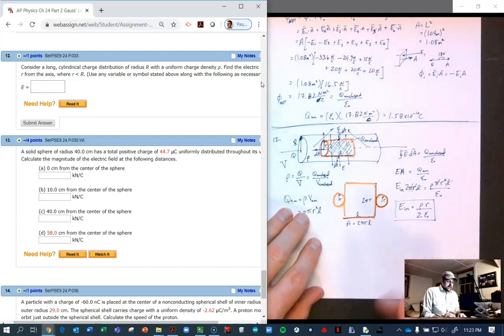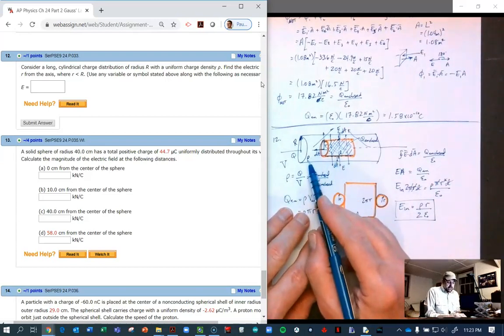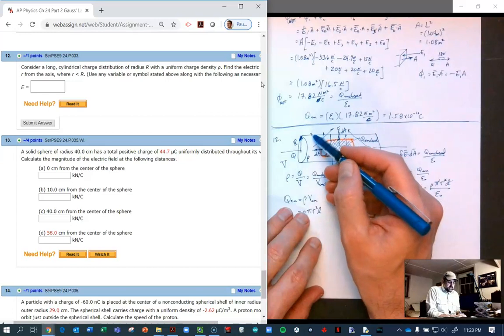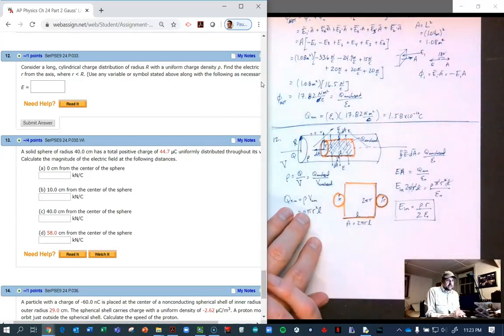We know it's an insulator because if it were a conductor then all the charges would be on the outside and there would be no electric field on the inside.